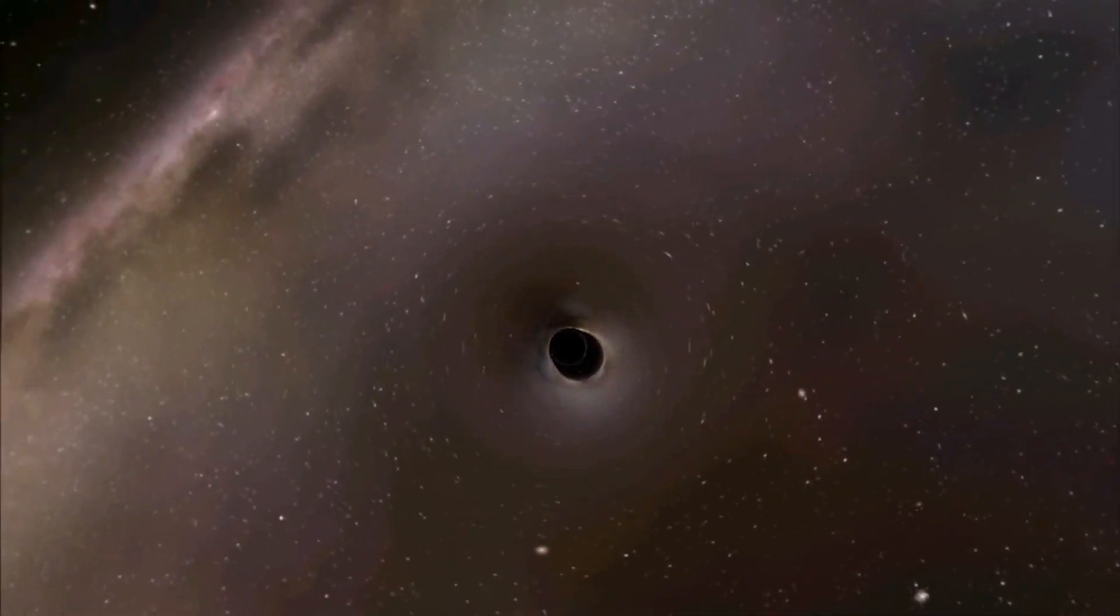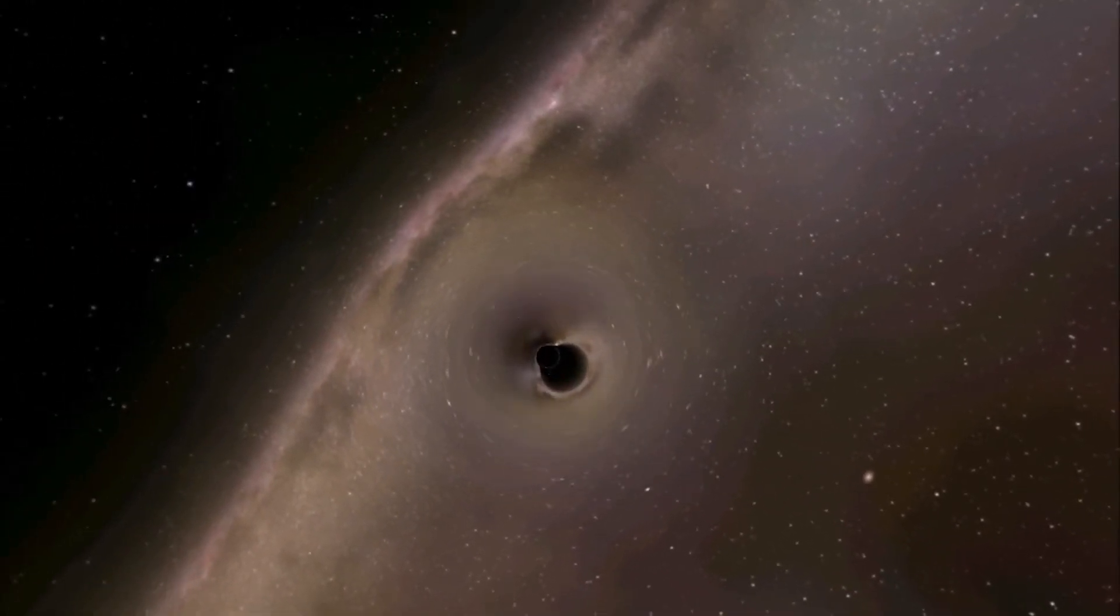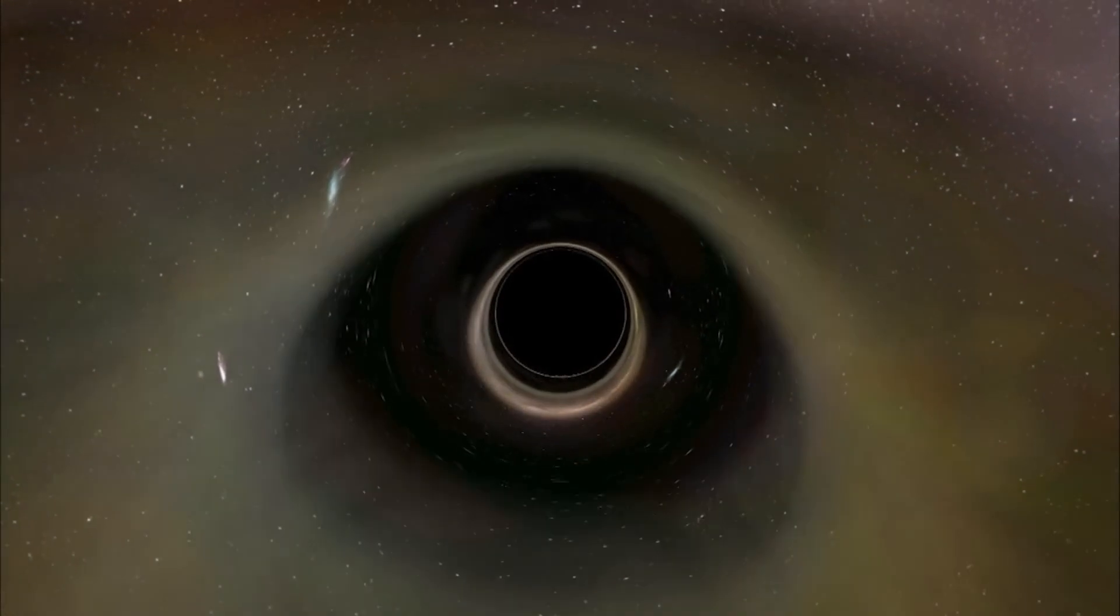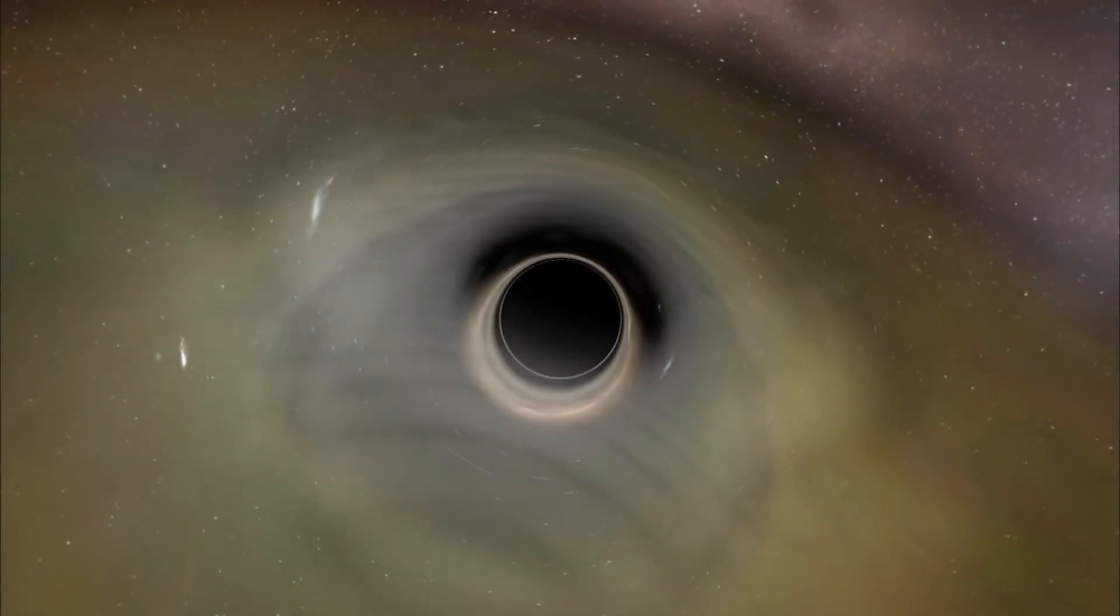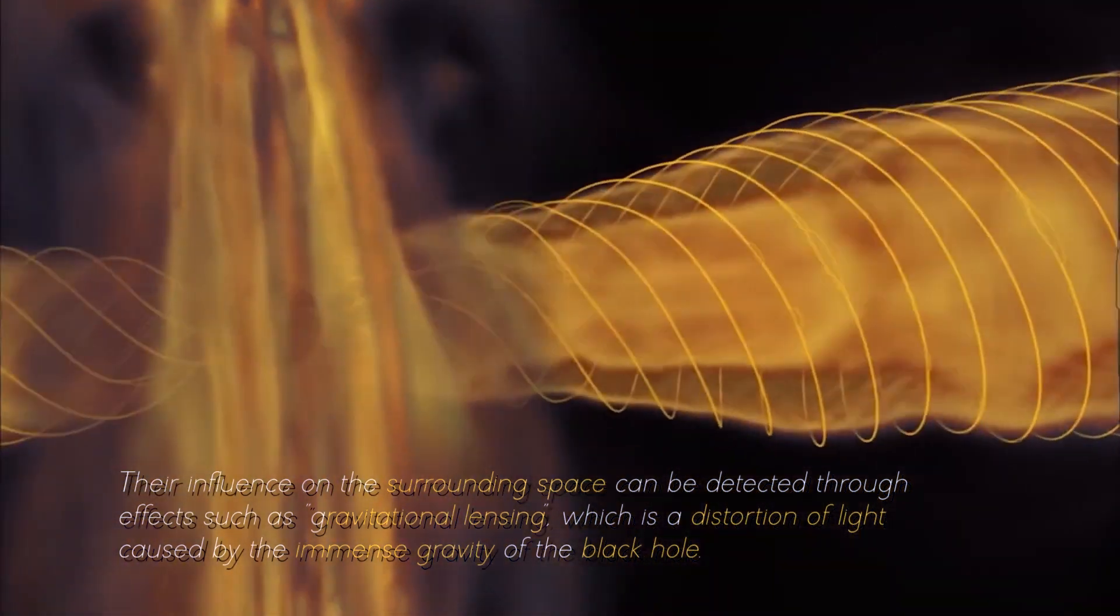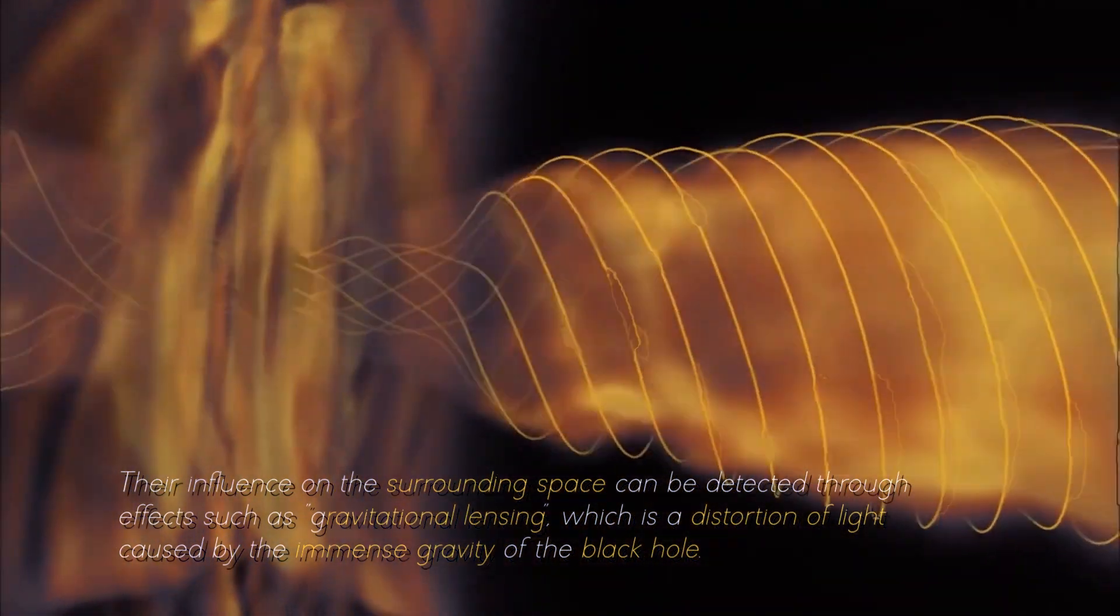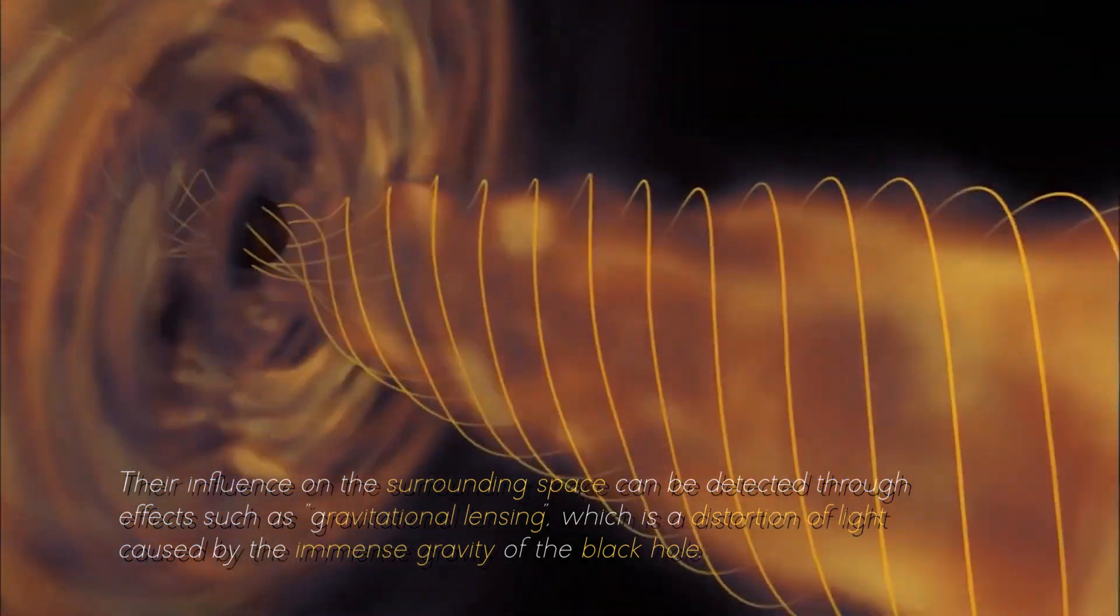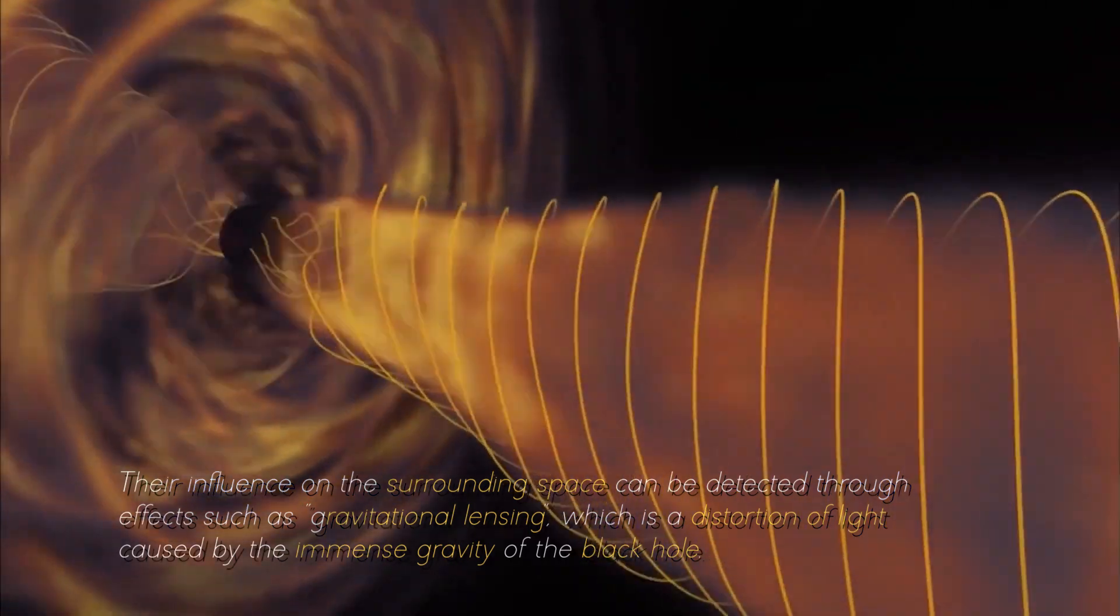The presence of an event horizon around black holes is what makes their direct study difficult, but this does not mean that it is completely impossible. Their influence on the surrounding space can be detected through effects such as gravitational lensing, which is a distortion of light caused by the immense gravity of the black hole.